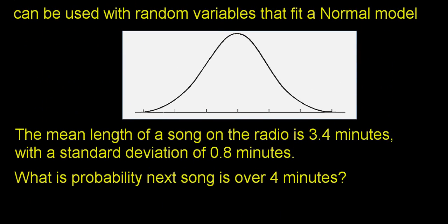The normal model can be used in lots of applications, including random variables. A random variable is a number you don't know — for example, how long is a song on the radio? I don't know, but there's probably a mean and songs probably deviate. That unknown value is a random variable, and if it follows a normal model, then I do know a lot.